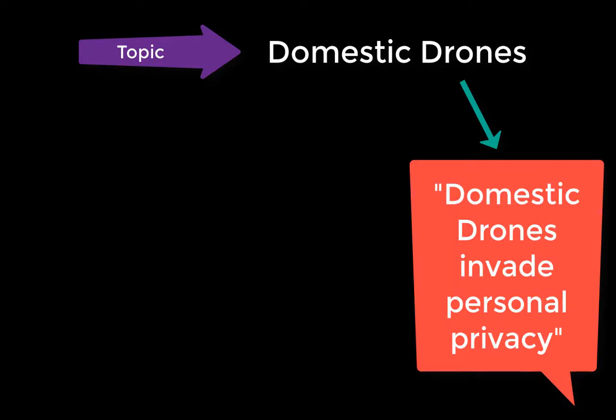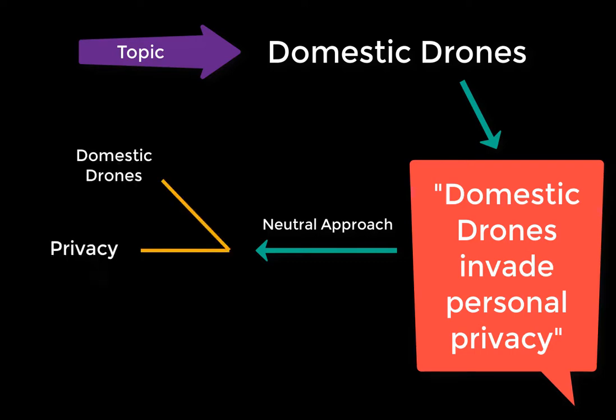You'll be most successful finding sources to support that argument if you take a neutral approach to the search. The first step in this approach is to select keywords that represent the full topic. Avoid searching for just your side of the argument. This will allow you to examine multiple perspectives of your topic and aid you in constructing a better argument.